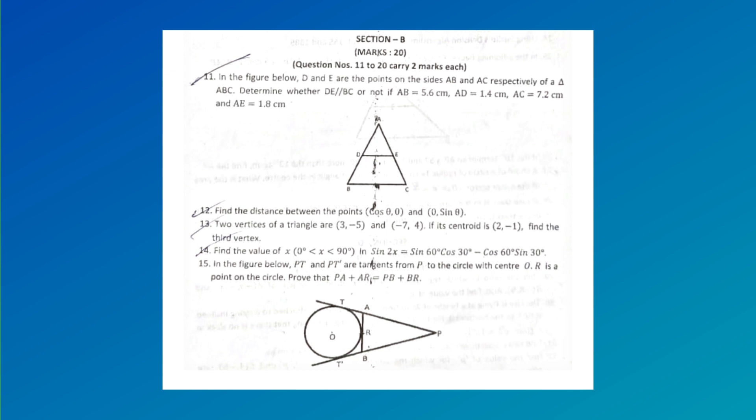In the figure below, D and E are points on sides AB and AC respectively of triangle ABC. Determine whether DE will be perpendicular to BC or not if AB = 5.6 cm, AD = 1.4 cm, AC = 7.2 cm, and AE = 1.8 cm. Find the distance between the points (cos θ, 0) and (0, sin θ). Two vertices of a triangle are (3, -5) and (-7, 4). If its centroid is (2, -1), find the third vertex.